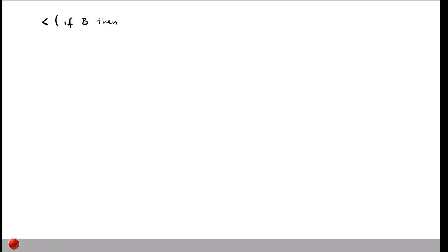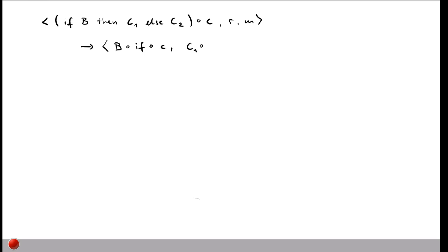Next, let's look at if commands. On top of the stack we have: if B then C1 else C2, followed by something else. To evaluate this, we put the Boolean expression B on top of the control stack to evaluate it first, then the if keyword to remember we're in an if statement, followed by whatever was on the stack. We also store C1 and C2 on the result stack so we know what to do once B is evaluated.